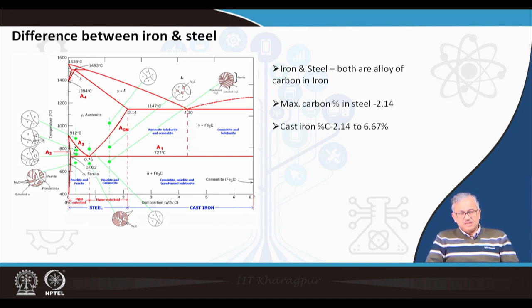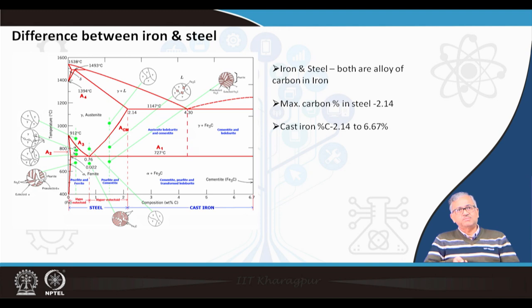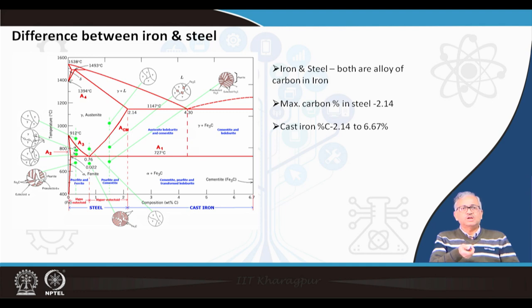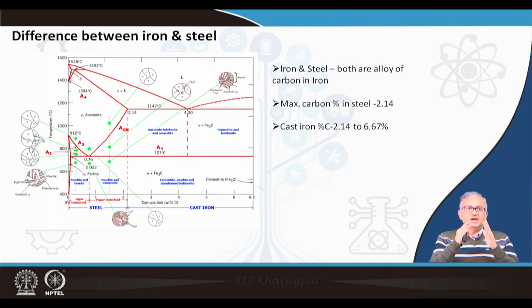The basic microstructural difference: at 0.76% carbon you get a structure called pearlite, which is an alternate layer of ferrite and cementite. Ferrite is a solid solution of carbon in iron with a maximum of about 0.02 wt% carbon — a very soft material. Cementite is an intermetallic compound between iron and carbon and is quite hard. Below 0.76% carbon is hypoeutectoid steel (pearlite + ferrite); above 0.76% is hypereutectoid steel (pearlite + cementite).